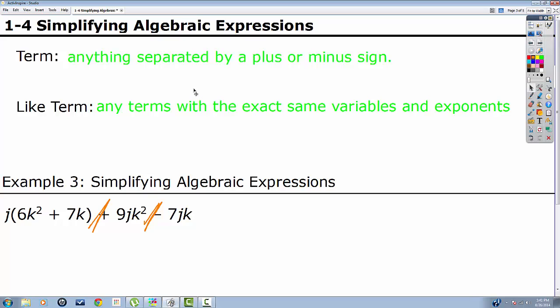And then we have like term. These are any terms with the exact same variables and exponents. Exact same. So if you look over here right now, we have no like terms. These have the same variables, j, k, j, k. But this has a squared, this doesn't. And these in here don't have j's. It's kind of outside here. Well we're going to do some algebra magic and get this to work.